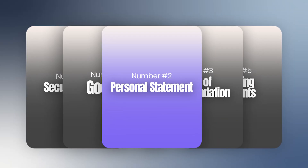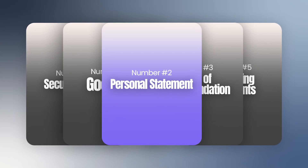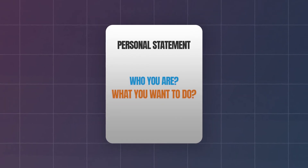The next part of your PhD application is your personal statement, sometimes called a research statement depending on where you're applying. It's usually a single document. This is where you get to contextualize who you are and what you want to do. I think there is a golden template for putting these together.